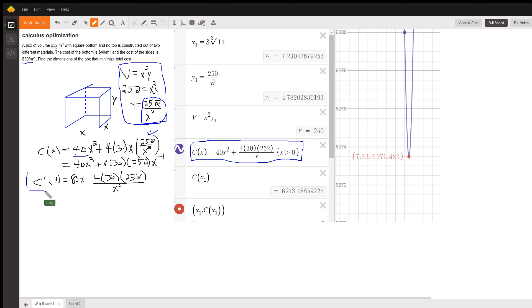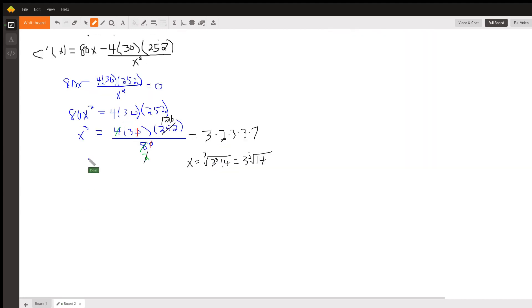If I go to board 2 and set the derivative equal to 0, which I've done here, I can solve this for x by multiplying every term by x squared, and I'll get 80x cubed minus this numerator, and then I can add this numerator to both sides or transpose that term to the other side of the equal sign.